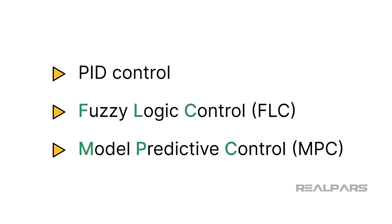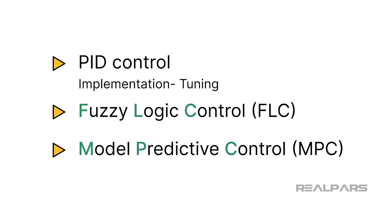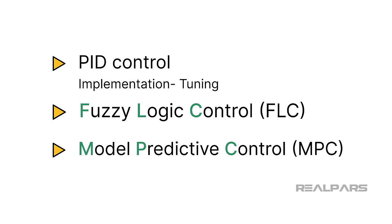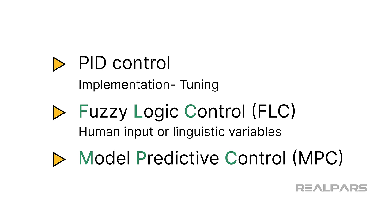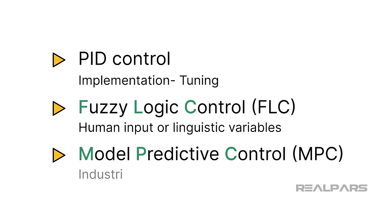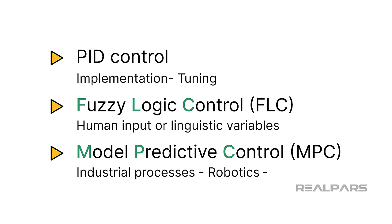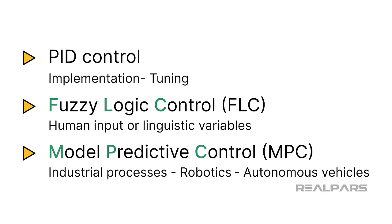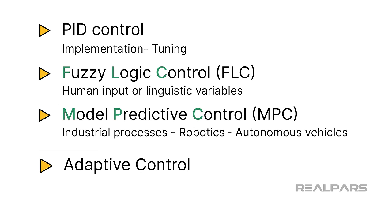Each control method we've discussed in this video has its strengths and suitability for different types of systems and applications. PID control is used in simple process applications where implementation and tuning are relatively easy. FLC is suitable where human input or linguistic variables are involved, such as consumer appliances. MPC works well in systems with multiple interacting variables, such as industrial processes, robotics, and autonomous vehicles. As we said earlier, there are other alternatives to PID control, such as adaptive control and neural network control, and we'll leave those for another time.